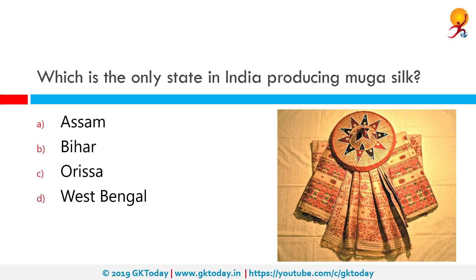Which is the only state in India producing Muga silk? The correct answer is Assam. Muga silk is the product of the silkworm Antheraea assamensis, endemic to Assam. The silk produced is known for its glossy fine texture and durability.